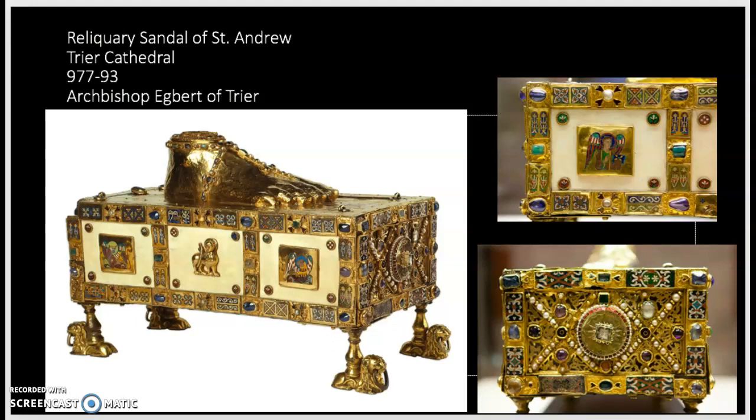Egbert had a really prolific workshop that he supported, which produced a lot of Ottonian metalwork. There are three main surviving metalwork pieces that were most certainly commissioned by Egbert. What's interesting about these three surviving pieces is that they show us a real diversity in style and workmanship — that there were a lot of different stylistic impulses at the same time. What we're looking at here is a masterpiece of goldsmithing. The gold base contains a coin of Justinian on one of the short ends, and you can see that coin here on the bottom right.